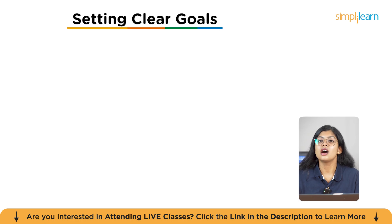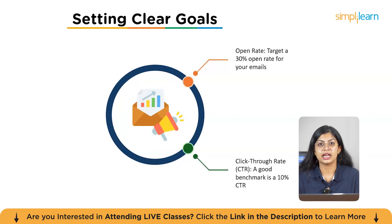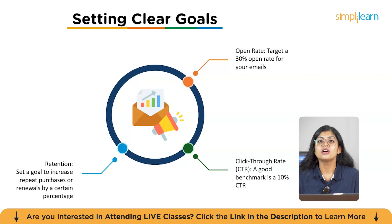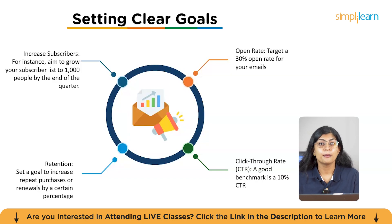Before diving into a campaign, it's important to set clear and measurable goals. For example: open rates — target a 30% open rate to confirm your subject lines and sender name are effective. Click-through rate — a good benchmark is 10% CTR, meaning people are engaging with your content. Retention — set a goal to increase repeat purchases by a certain percent, such as 5% more sales from previous customers. And subscriber growth — aim to grow your list by 2,000 people by end of quarter. Pro tip: make your goals specific, measurable, and realistic, and track them weekly.